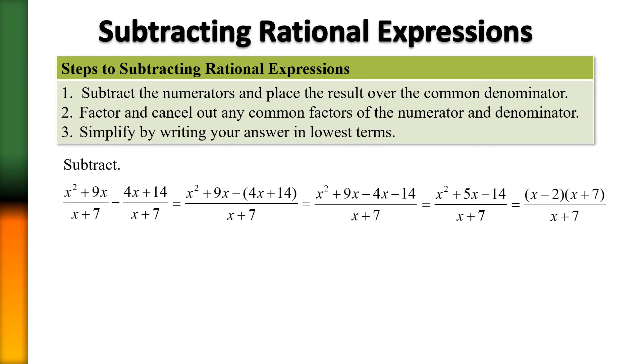In other words, something from the top that matches exactly with something from the bottom. So what can we cancel? That is correct, we can cancel the x+7, and what we're left with here is our answer of x minus 2.